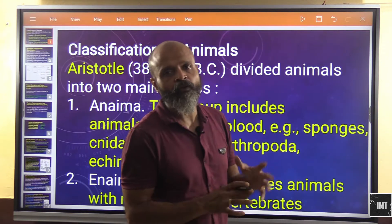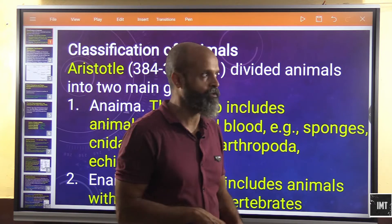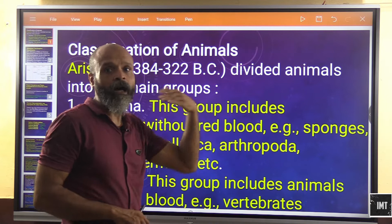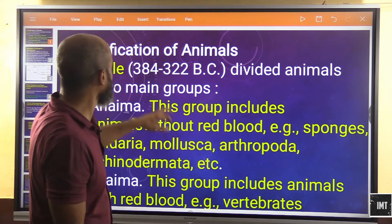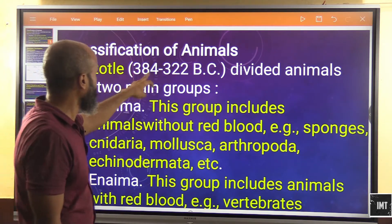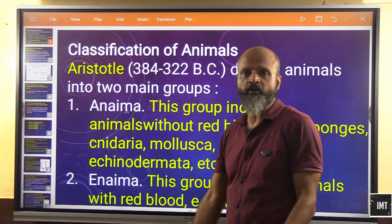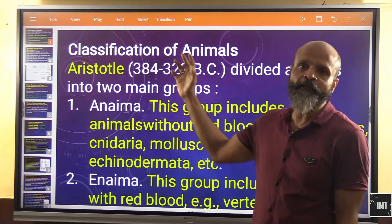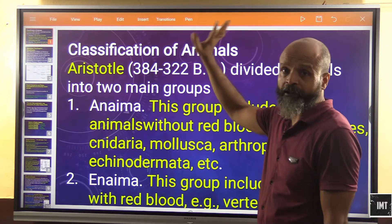We will cover a number of slides, starting with the first kingdom — sponges. But first, we need some background on how scientists attempted to classify animals. Classification of animals was first attempted by Aristotle, more of a philosopher than a scientist, but a significant contributor during 384 to 322 BC.